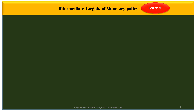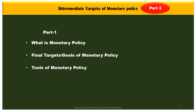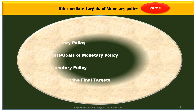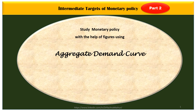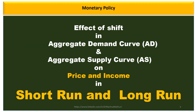Welcome to Part 2 of the intermediate targets of monetary policy. In Part 1, we did a brief discussion on what monetary policy is, its final goals, its tools, and the problem of trade-off among the final targets. Here in Part 2, we will discuss monetary policy using figures with aggregate demand and aggregate supply curves, and find the impact on price and income in the short run and long run.